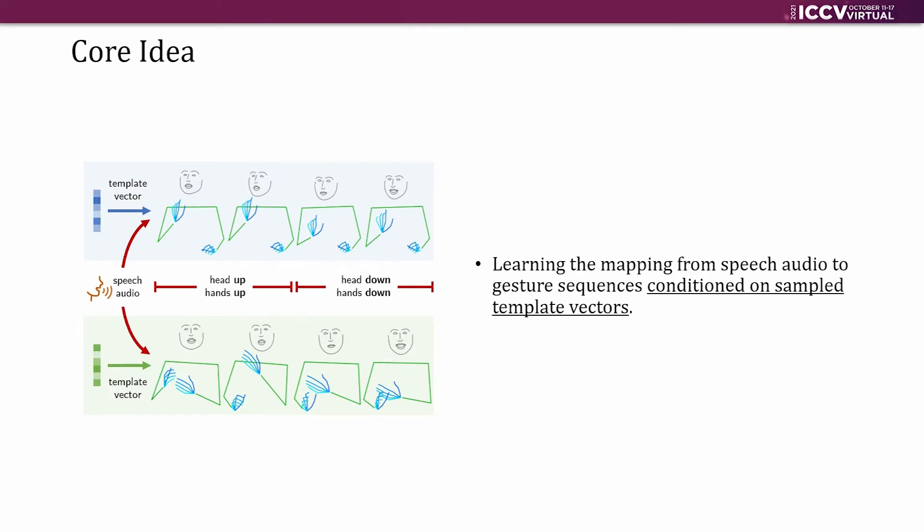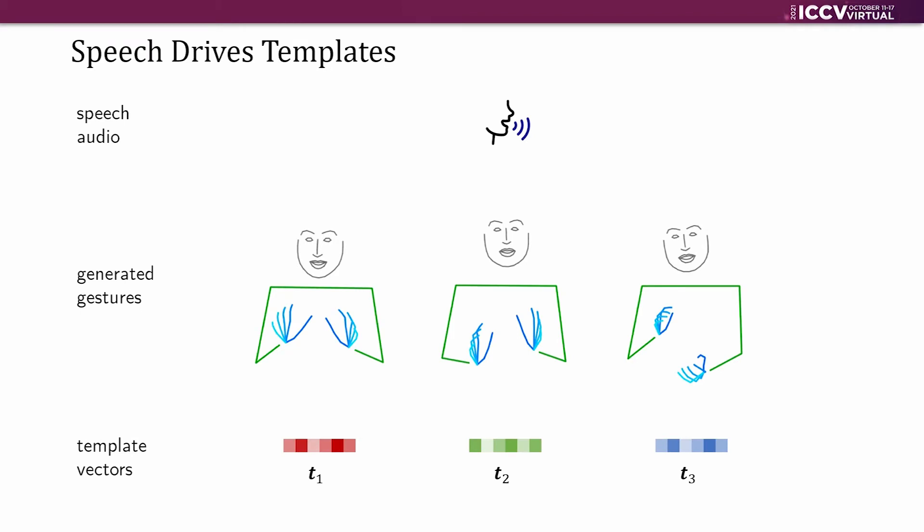Our model takes in an audio clip and a condition vector to generate a gesture sequence. This condition vector is called template vector in our paper, because it functions like a gesture template. Here is an example. Given a speech audio, our method generates three gesture sequences conditioned on different template vectors. Look how these gestures differ and how each of them perfectly match the speech audio.